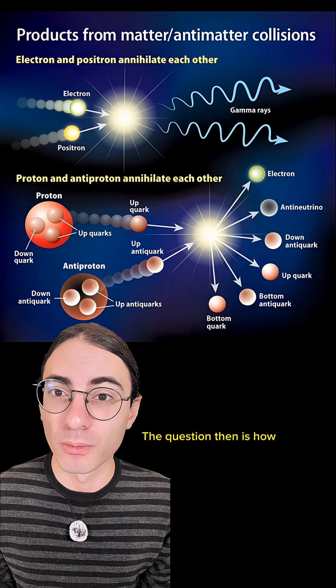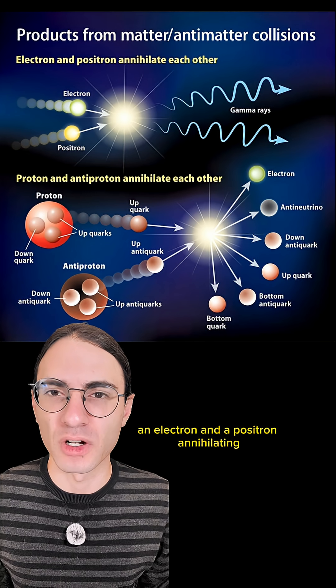The question then is how? I'm going to try to explain the simplest case, an electron and a positron annihilating, with an analogy.